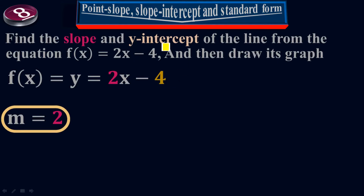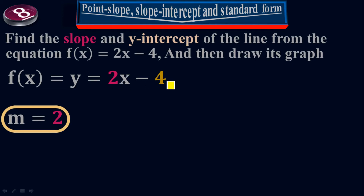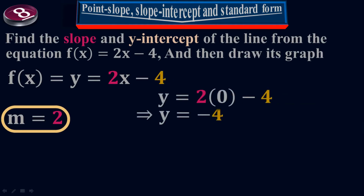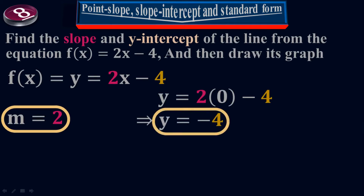I'm simply talking about the slope of the line and the y-intercept of the line, which is b. To calculate b, I plug in x equals 0, which gives y equals negative 4. Negative 4 is my y-intercept, and my coordinate point will be (0, negative 4).